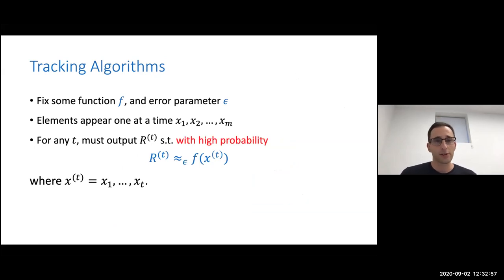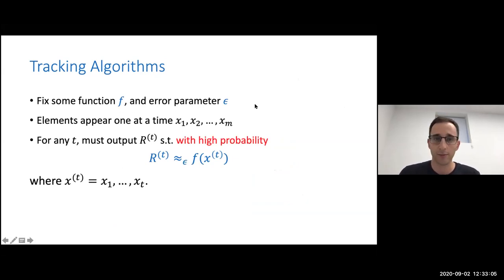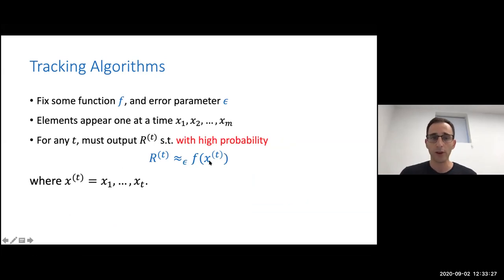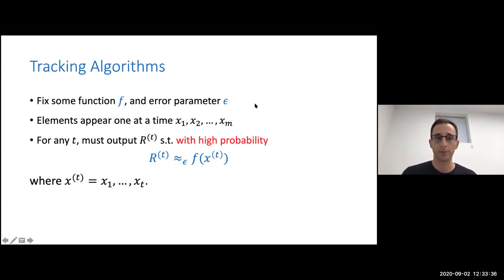More specifically, we're going to talk about tracking algorithms. If I have some goal — I want to compute some function f of the data with some error parameter — elements appear one at a time. A tracking algorithm doesn't just output the right output at the end of the stream. For every timestamp t, it outputs r_t, where r_t with high probability is going to be close to the true value f of x_t, where x_t is the stream up to time t. So we just want to be approximately correct at every timestamp.